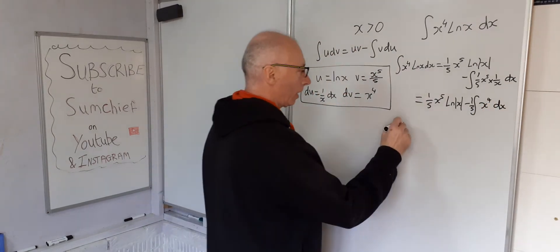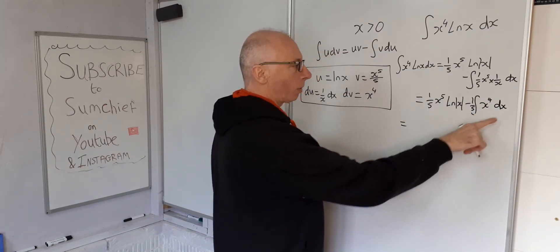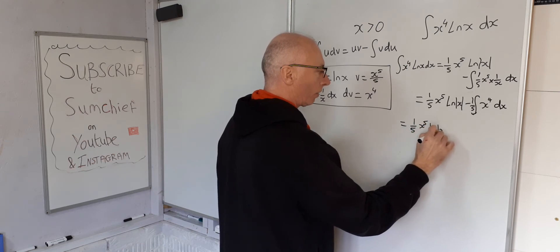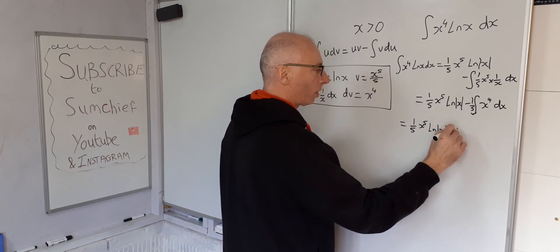Okay, right. Now we're ready to integrate this one. Straightforward power rule. So we get 1 over 5 x to the 5. Natural log of x. Minus 1 fifth.